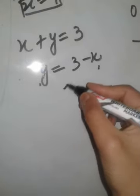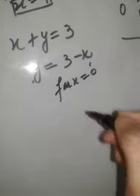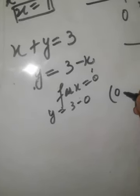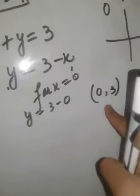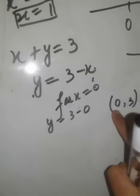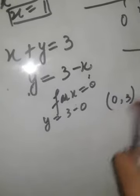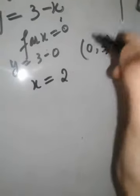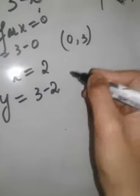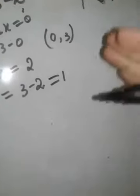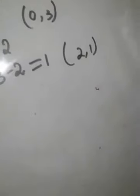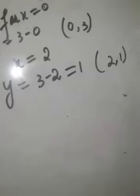Since x is a real number, x can take any value. For x equals 0, y equals 3 minus 0, so one solution is (0, 3). Remember from coordinate geometry, x is always written first and y later — x is the x-coordinate and y is the y-coordinate. For x equals 2, y equals 3 minus 2, which is 1, giving another solution (2, 1).